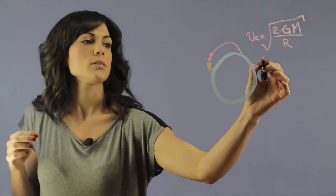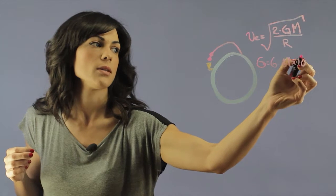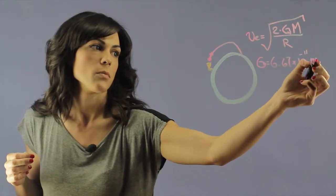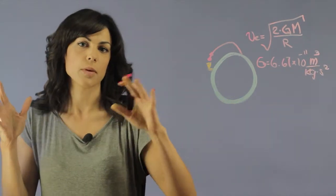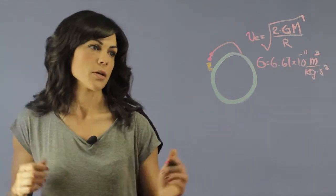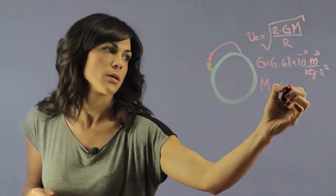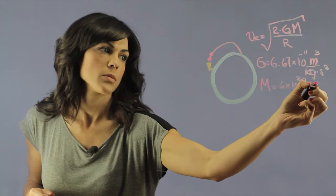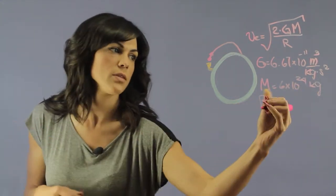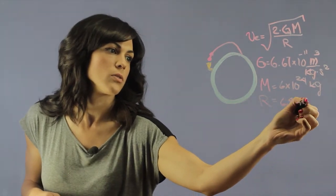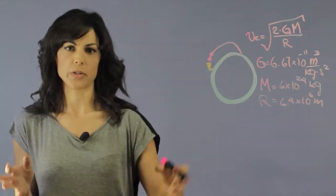The gravitational constant G is 6.67 times 10 to the minus 11, and the units are meter cubed kilogram per second squared. I'm going to switch from miles to kilometers now. Then I have the mass of the earth which is 6 times 10 to the 24 kilograms, and the radius of the earth, let's say to escape the surface, is 6.4 times 10 to the 6 meters. This is going to be an approximation as we're going to do it here on the board.